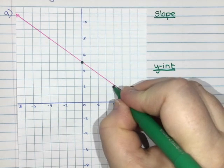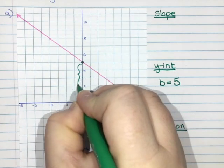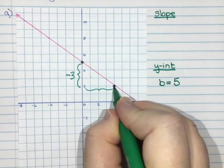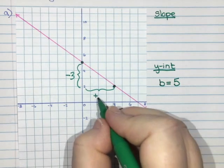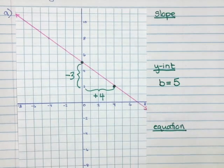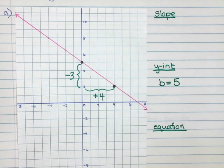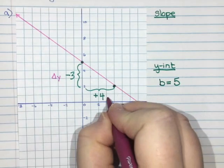So I noticed that we went down three and then we added four. Our x values got bigger, right? We went from zero to four so we added four. So we are subtracting three from our y and we're adding four to our x.